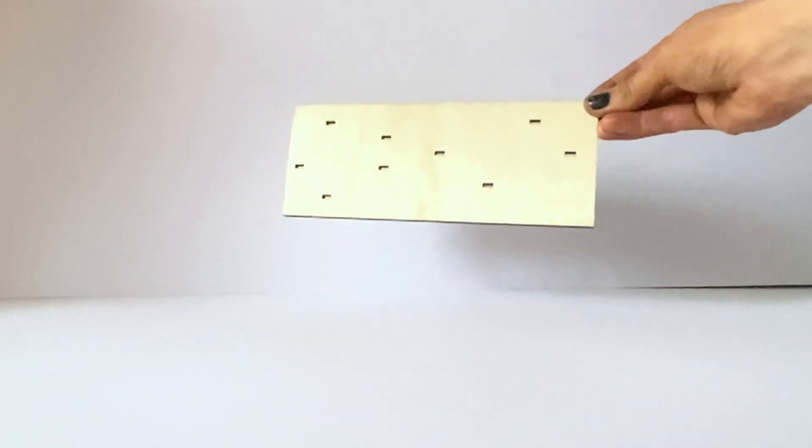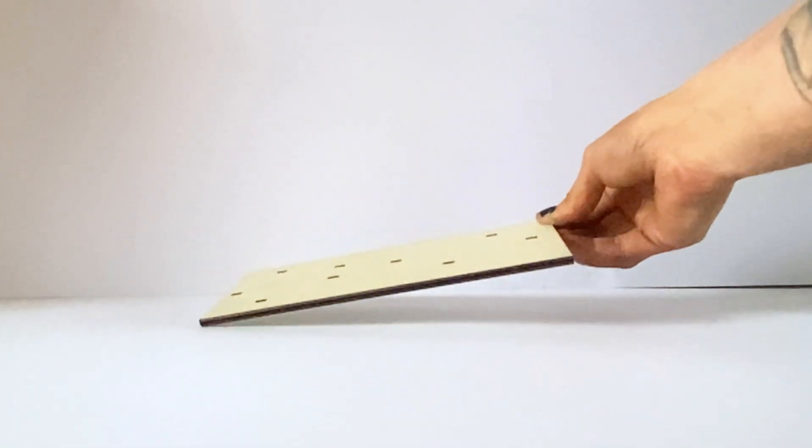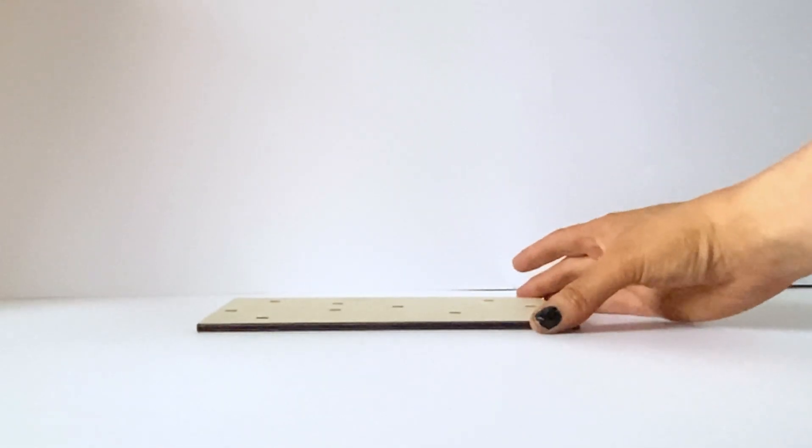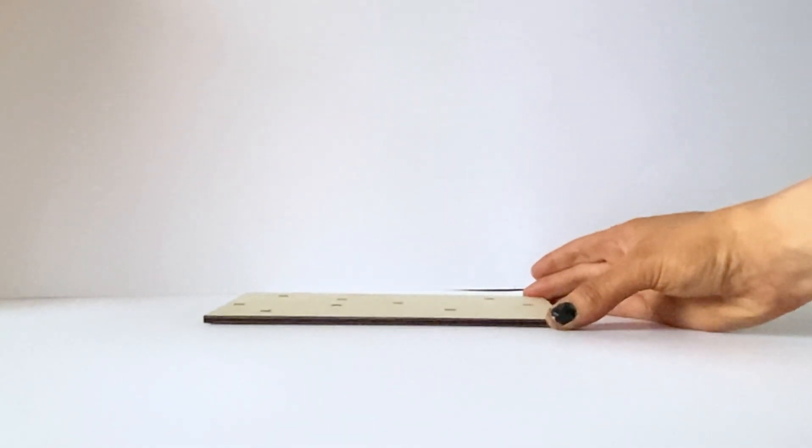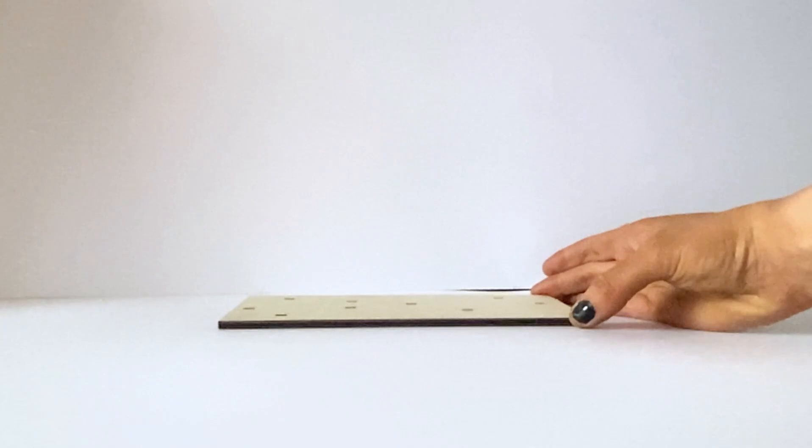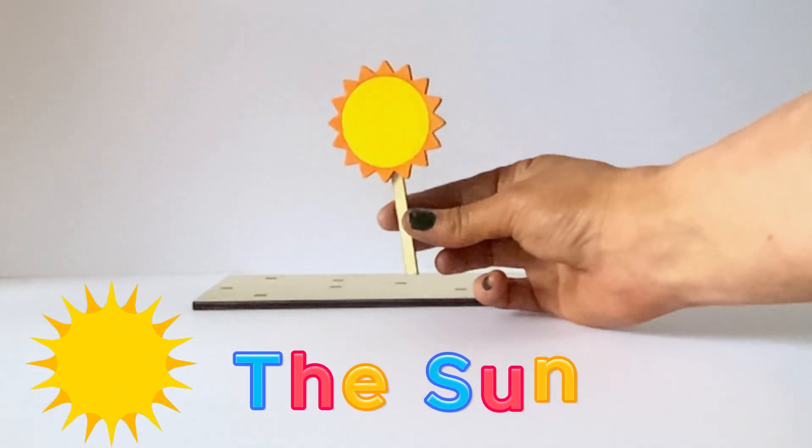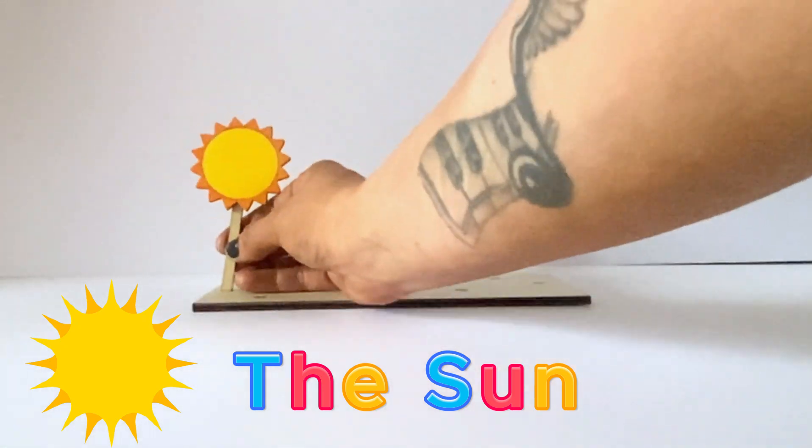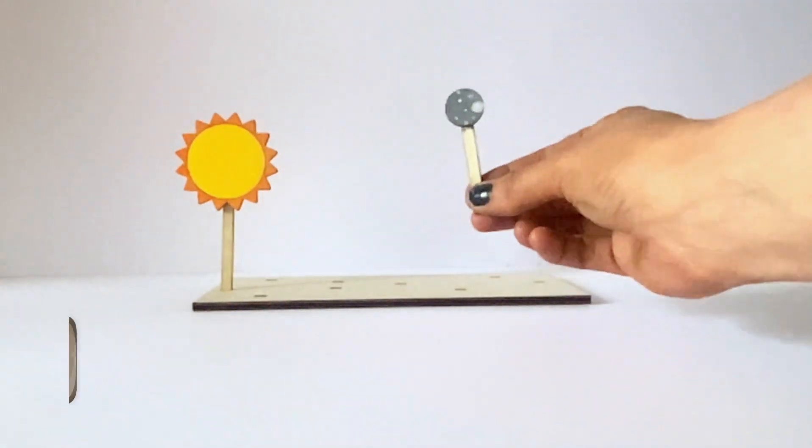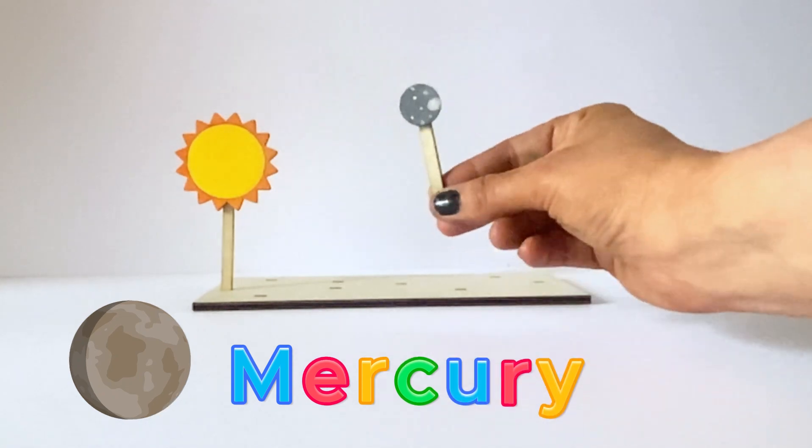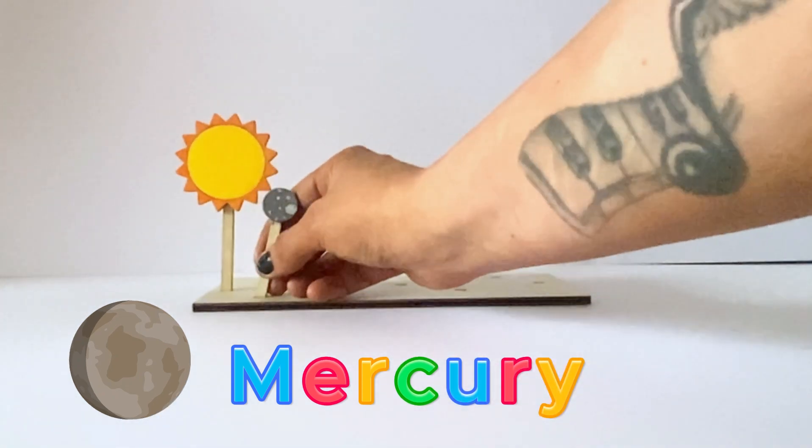Lastly, we're going to place all of the planets and the Sun into this wooden holder. If you've created them yourself, you can stick them into a piece of foam or something else. So first, we'll put in the Sun as all of the planets orbit the Sun. Next, we're going to put in Mercury, the first planet from the Sun.